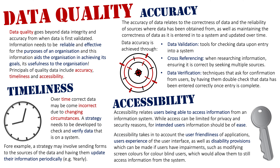I hope this has given you a good understanding of what data quality is. Accuracy relates to data being entered into the system and being correct at the time of entry. Timeliness means checking data over time and ensuring that data on the system stays correct. And accessibility means that for intended users, they can easily access the information they require on the system to complete their day-to-day tasks.